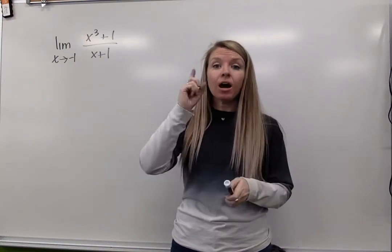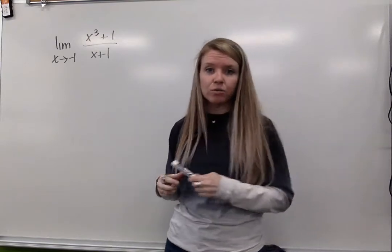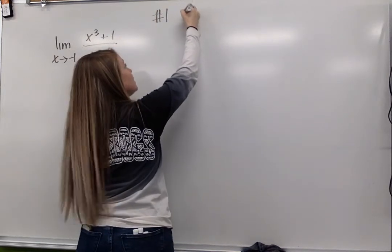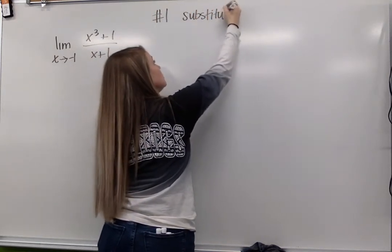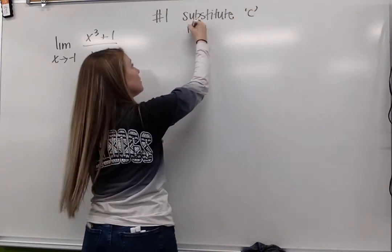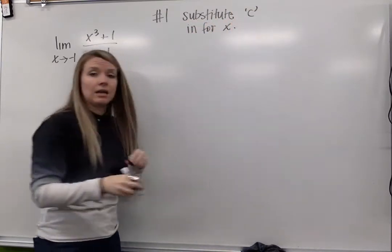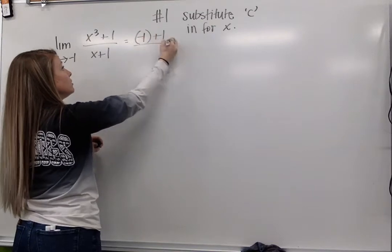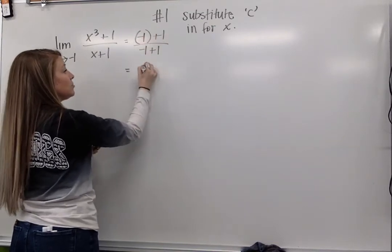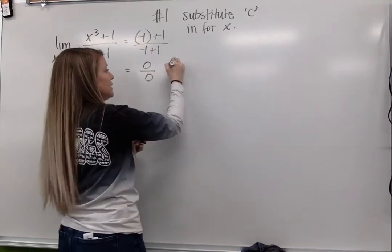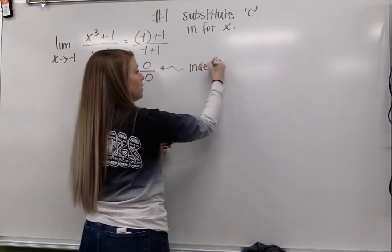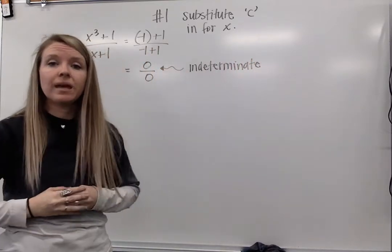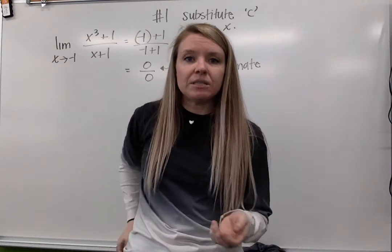When we evaluate a limit, our first step is to always substitute our c value in for x. Number one, solving for a limit: you are going to substitute your c in for x. In our previous video, I've done that. I've gone in and plugged in my c value, and I end up getting 0 over 0. This is an indeterminate form, and essentially what it's telling me to do is to do more work. I'm not ready to answer my limit — I've got to do something to figure it out.